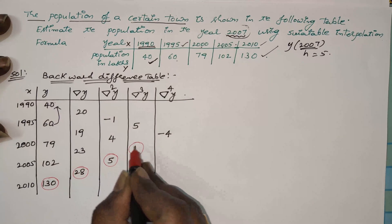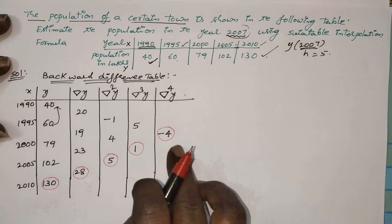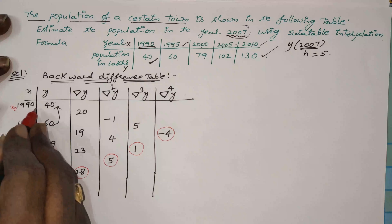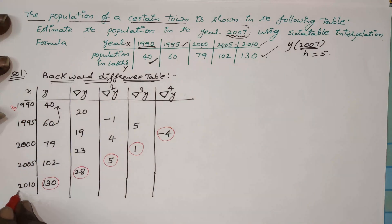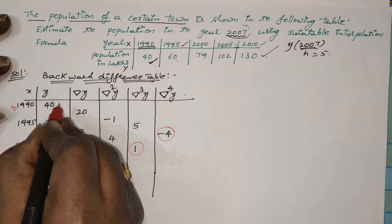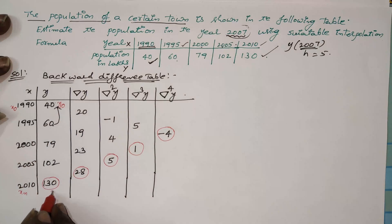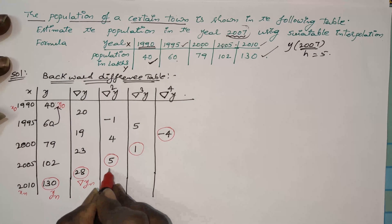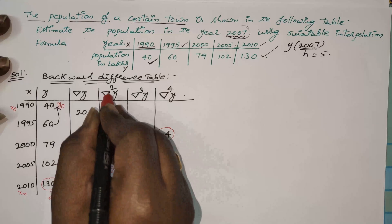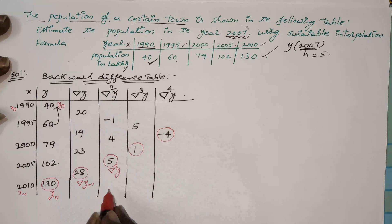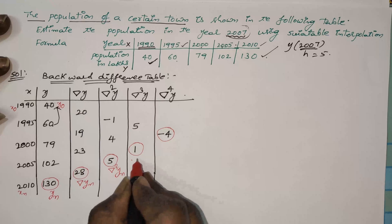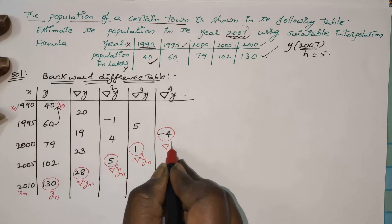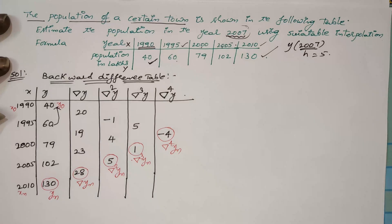We will use these values in Newton's backward interpolation formula. x₀ is the starting value of the data and xₙ is the last one. The respective y values are y₀ and yₙ. The last column values are: ∇yₙ, ∇²yₙ, ∇³yₙ, and ∇⁴yₙ.